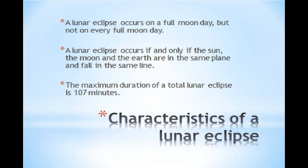Characteristic of lunar eclipse. A lunar eclipse occurs on a full moon day, but not on every full moon day. A lunar eclipse occurs if and only if the sun, the moon and the earth are on the same plane and fall in one line. And the maximum duration of a total lunar eclipse is 107 minutes.